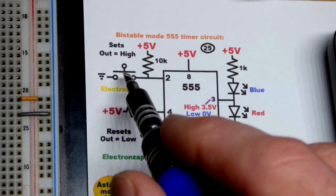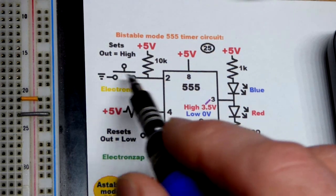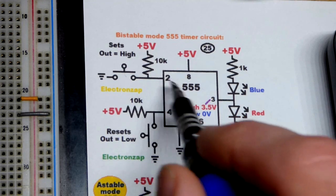But if we press the button to the trigger pin then we'll give a low input to pin 2. It's active low. That makes it respond.